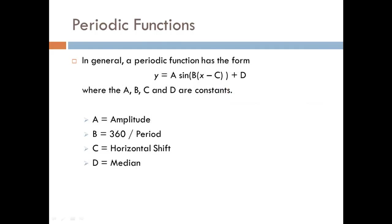In general, a periodic function has the form y equals a constant A times the sine of the quantity, another constant B times the quantity x minus C, which is another constant. And then we close both of those quantities, and we have plus D on the end. We need to remember what these four constants represent. The A is the amplitude, which was how tall the graph was. B we can compute by taking 360 divided by the period.